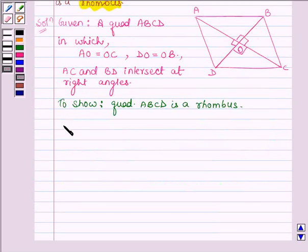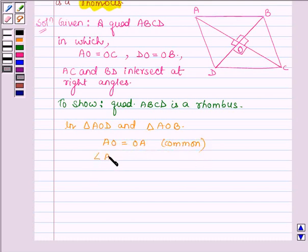Now in triangle AOD and triangle AOB, AO is equal to OA. This is common to both the triangles. Angle AOB is equal to angle AOD is equal to 90 degrees.